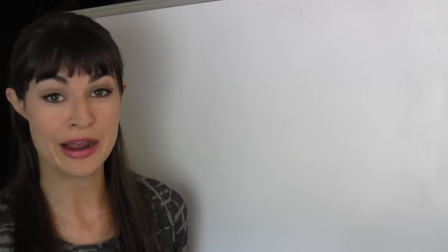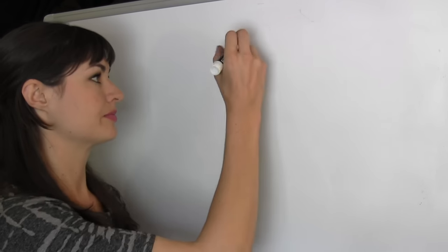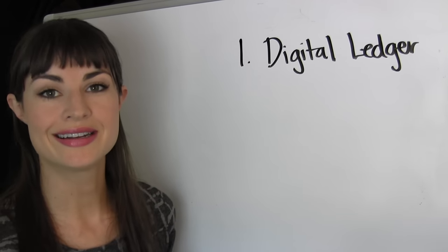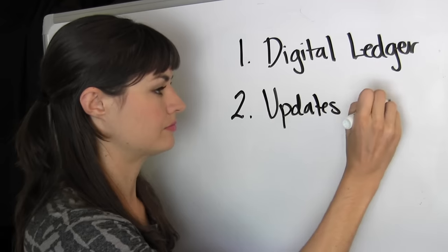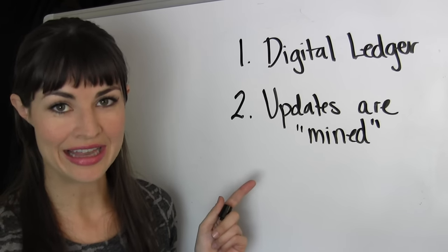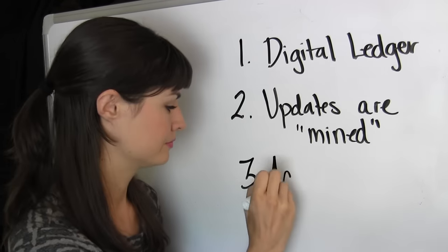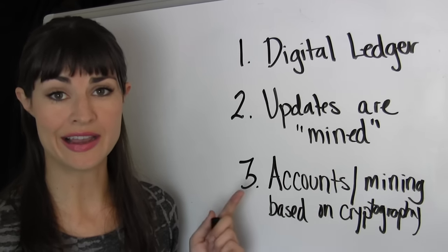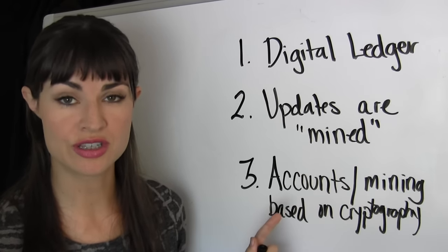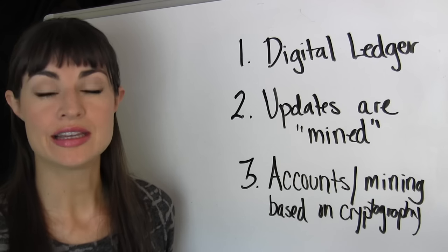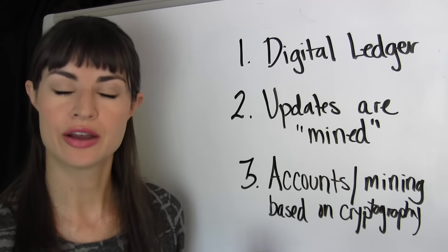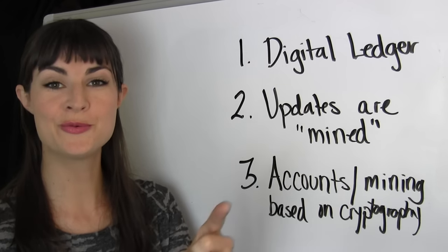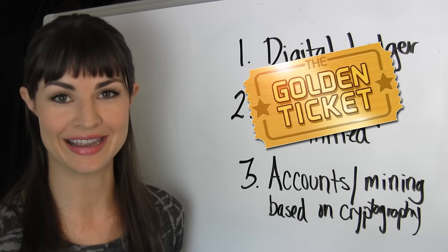So I have to say right now congratulations to you because thus far you already know everything you need to know about a blockchain. First, that it's a digital ledger. Second, that updates to it are mined. And third, is that the account system, you know, the sending and receiving bit, as well as the mining system, is all based on a form of math called cryptography. You win! You win the golden ticket for getting this far.